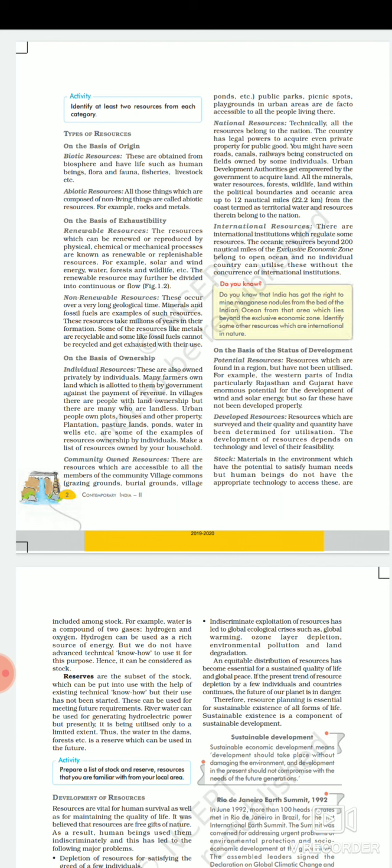Now let's talk about the basis of exhaustibility — renewable and non-renewable. The resources which can be renewed or reproduced by physical, chemical or mechanical processes are known as renewable or replenishable resources. For example, solar and wind energy, water, forest and wildlife, etc. The renewable resource may further be divided into continuous or flow resources, as shown in Figure 1.2.